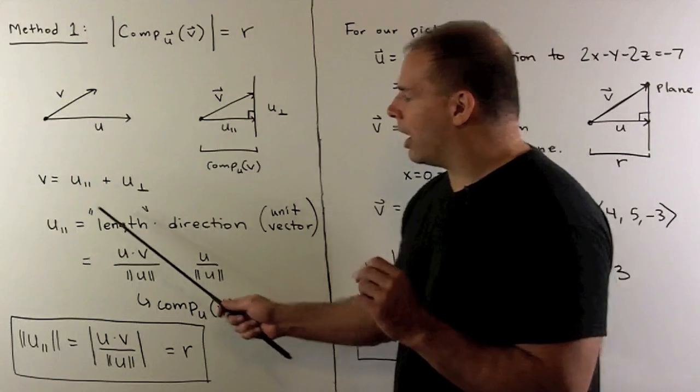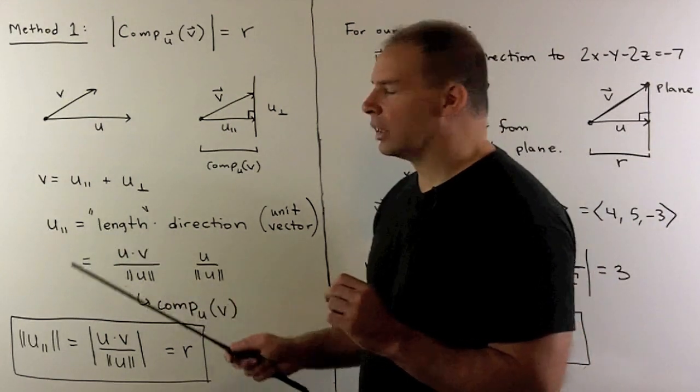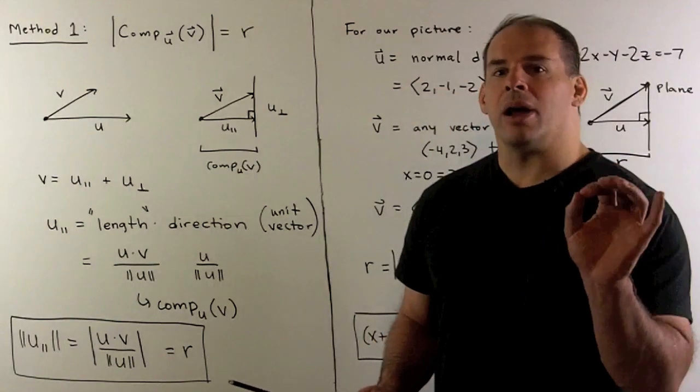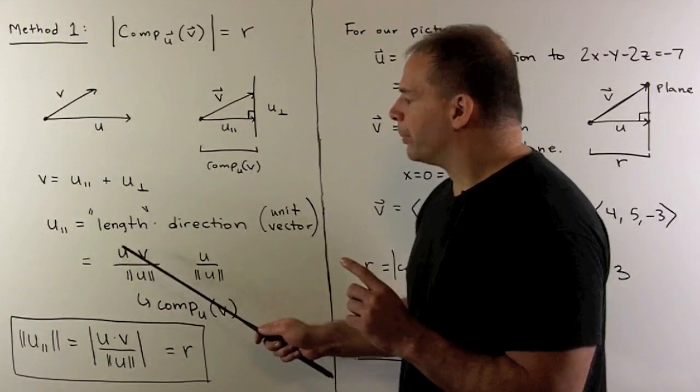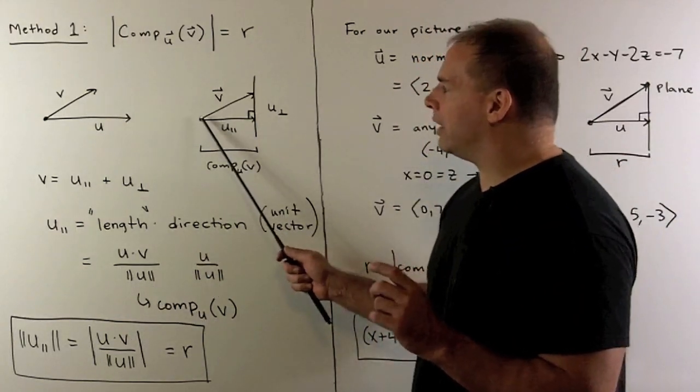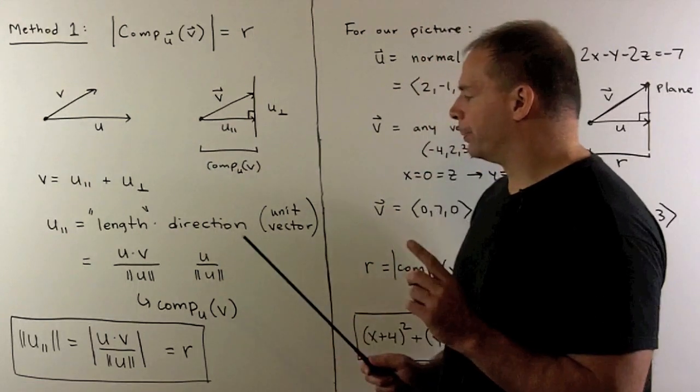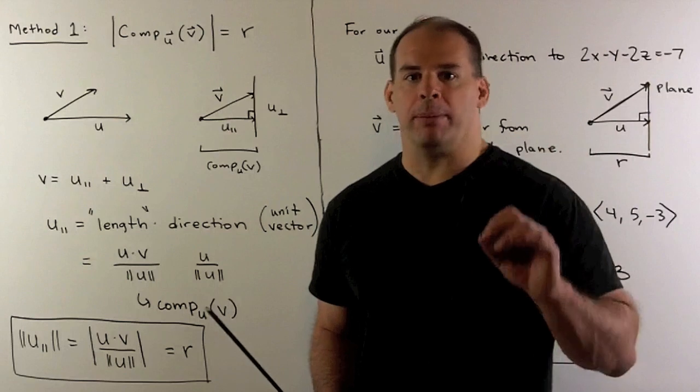Then what's left over is what we're going to call the component of v in the direction of u. So that's just going to be the length of the parallel part in the u direction. It's not a length proper because it can take on negative values, but if we have a minus sign, that just means u_parallel is pointed in the opposite direction of u. So if you want a proper length, you just drop the minus sign.